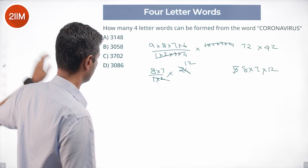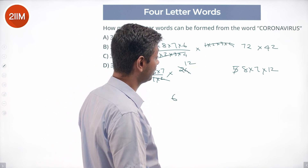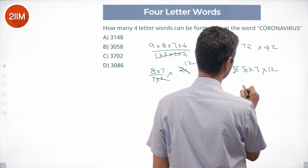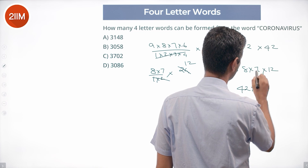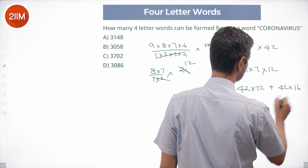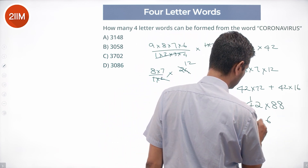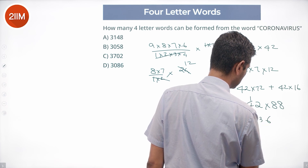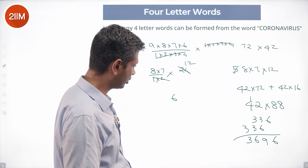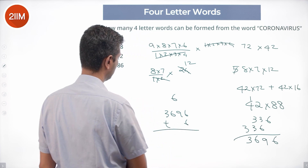For O, O, R, R: 4!/(2!×2!) = 6. Adding everything together: 3024 + 672 + 6 = 3702.